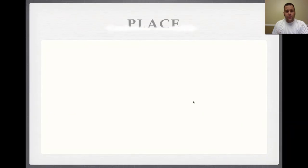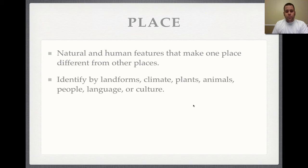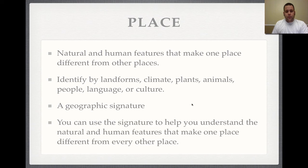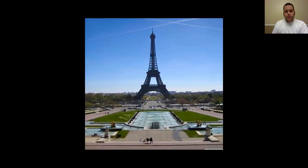Our third theme is place. Place refers to natural and human features that make one place different from others. This can be identified by landforms, climate, plants, animals, people, language, or culture — there are really a lot of different factors that go into the theme of place. There's also what we call a geographic signature, which helps people identify or understand where a place is. The best example is the Eiffel Tower — most of us know it's located in Paris, France, and it helps us locate exactly where Paris is.